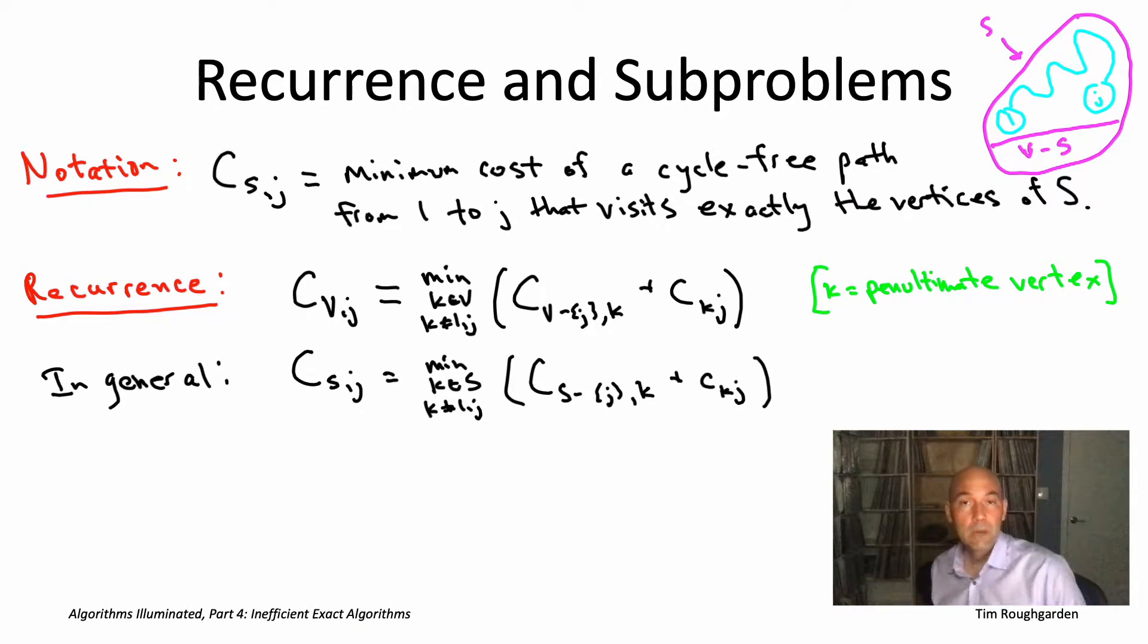So in words, if you show me an optimal path that visits exactly the vertices in capital S, it goes from one, it goes to j, and it's cycle-free. If you tell me the penultimate vertex on that path, I know what the rest has to look like. It's going to be a subpath. Now it visits all of the vertices of S except for that last endpoint J, and it visits the other vertices S minus J exactly once in a cycle-free way while going from one to K. So that's the general version of the recurrence for any vertex subset capital S.